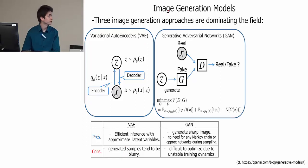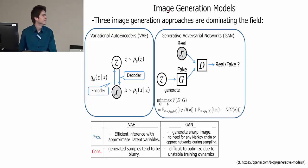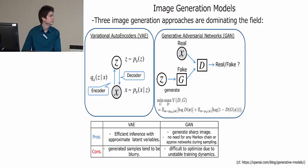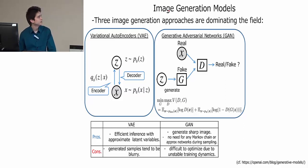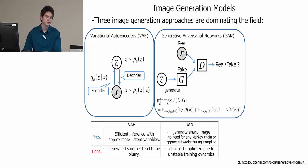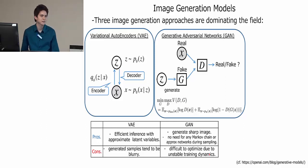Next is generative adversarial networks, which I'm sure we're all familiar with by now. They use an adversarial loss to train their models. GANs generate sharper images than VAEs and they don't need any kind of approximation, which is good. But they're hard to optimize because of the unstable training dynamics created by the adversarial nature.